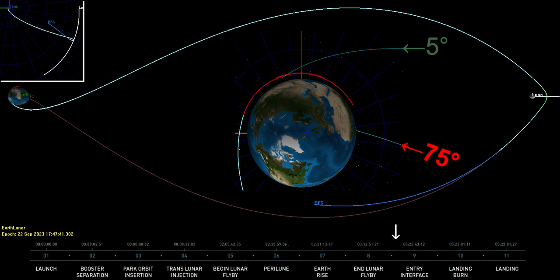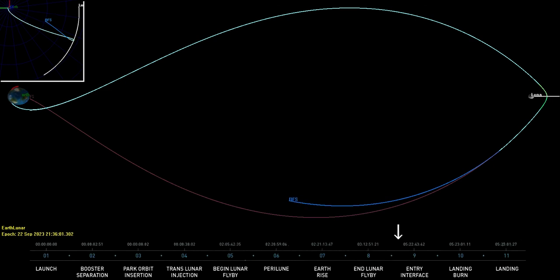If the spacecraft continued on this course, it would subject its crew to a lethal 300 Gs of deceleration, assuming they even survived long enough to avoid burning up.